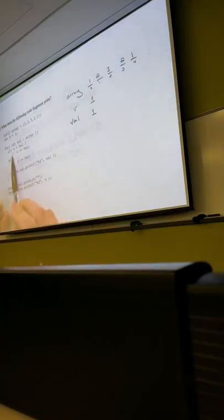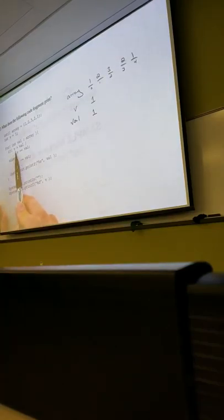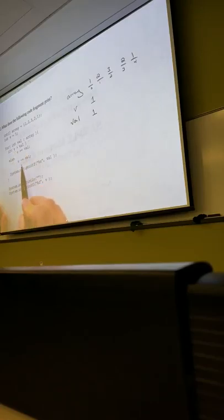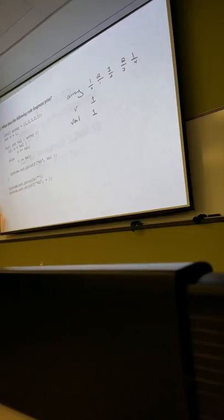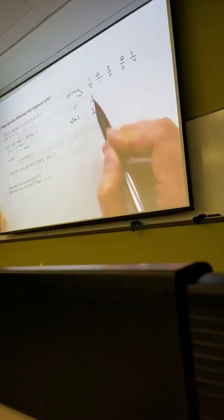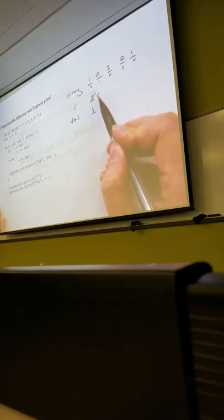I'm going to go through the check. I have an if-else: if V is greater than val — that's not true. So the else branch runs: V minus-equals val, which means V equals itself minus val. So V equals 1 minus 1, which is going to be 0.